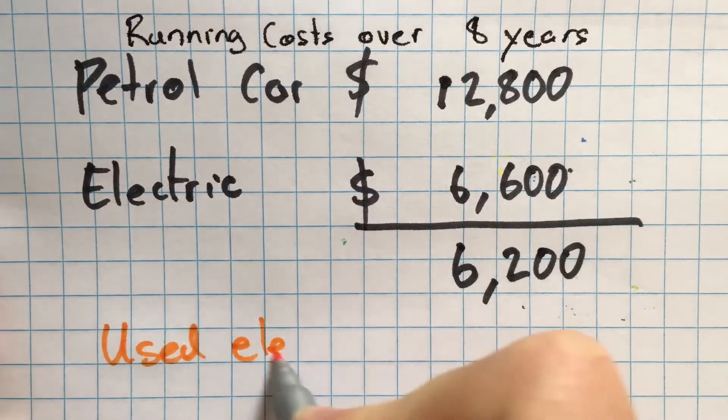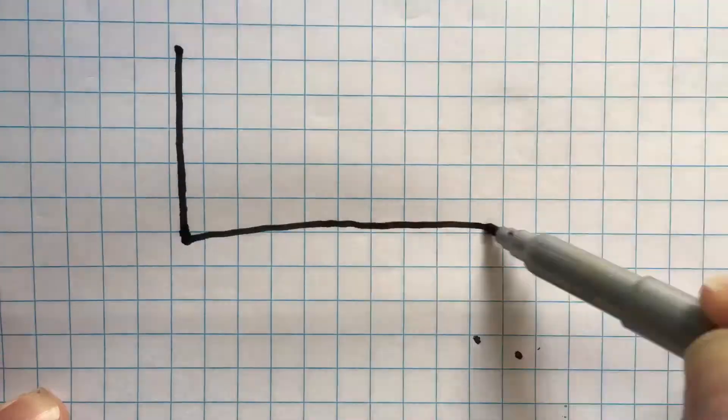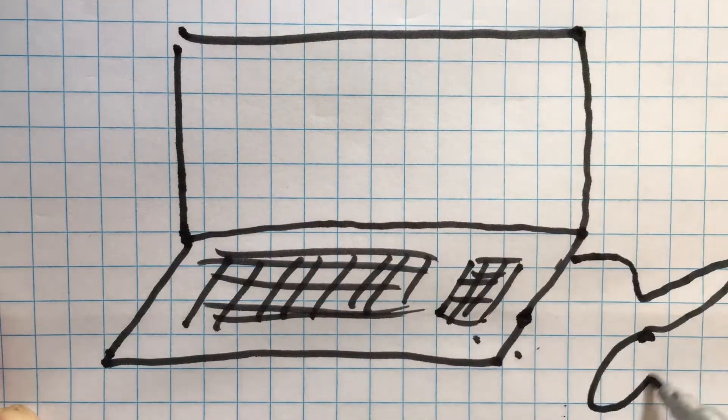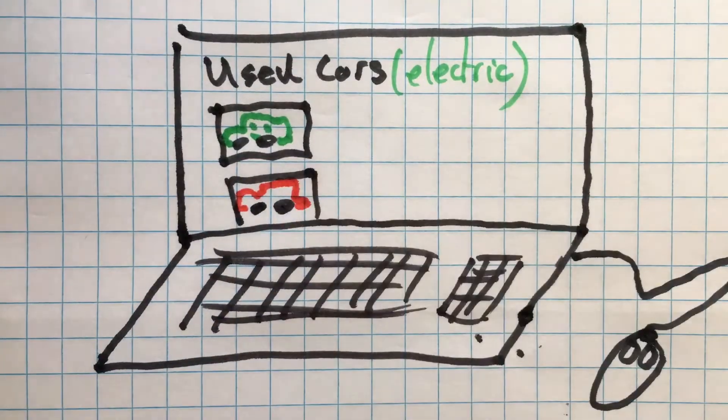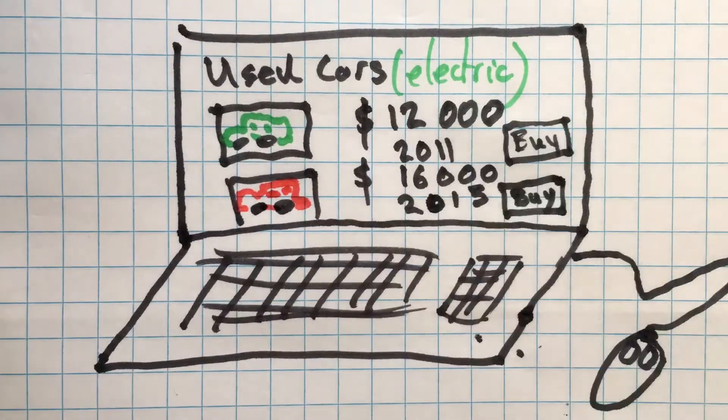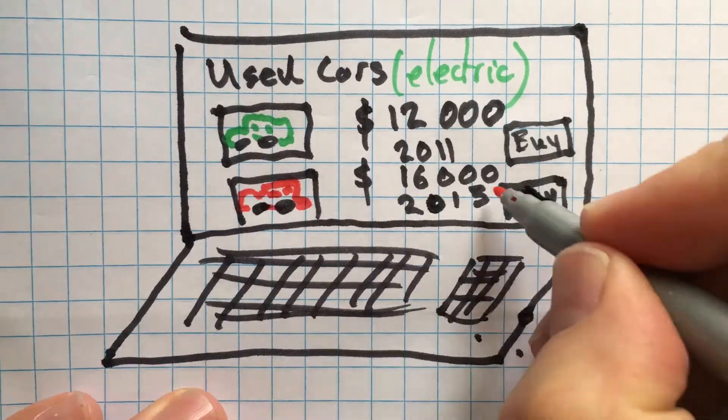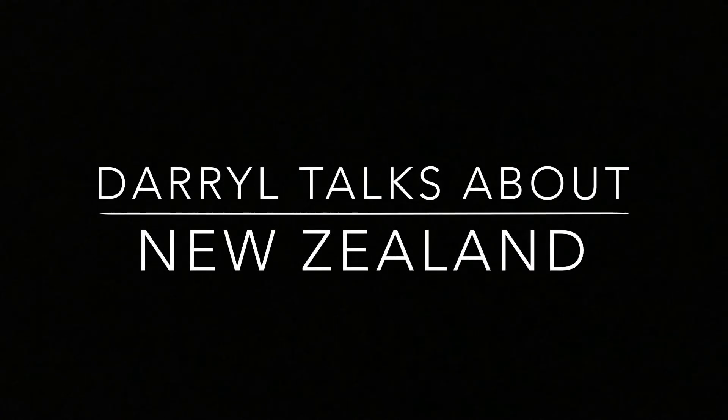You can buy a car that costs $6,000 more as an electric car than you would as a petrol car and it will come out at the same price. Or if you spend the same amount of money on a used car—say we're going to buy a $15,000 or $16,000 petrol car and you bought an electric car instead—you'd save $6,000, about $6,500 over your eight years of ownership.